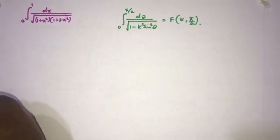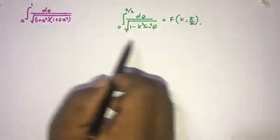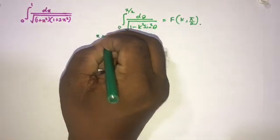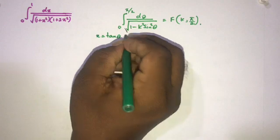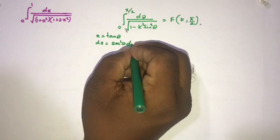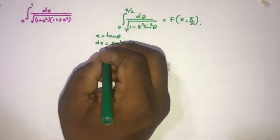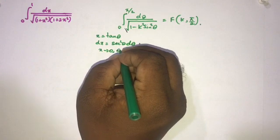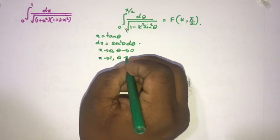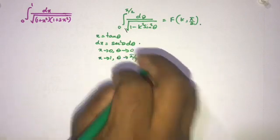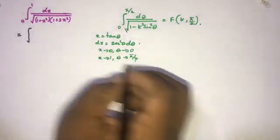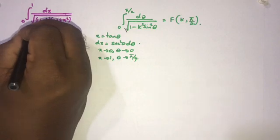Now I am going to try to make this type of integral. I am going to take the substitution x = tan(θ). Differentiating, dx = sec²(θ) dθ. Lower limit: when x approaches 0, θ also approaches 0. Upper limit: when x approaches 1, θ approaches π/4.